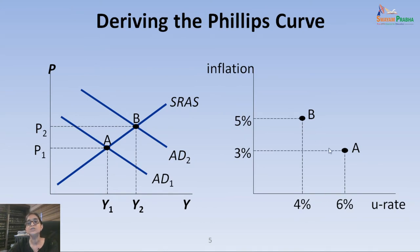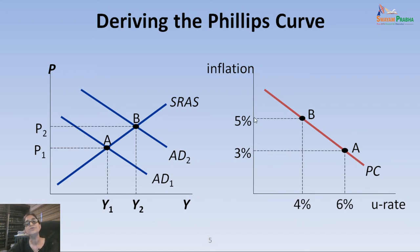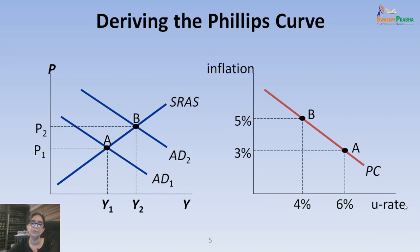The price level has increased from P1 to P2. If at P2 the inflation rate is 5%, because output has increased the unemployment rate has decreased from 6% to 4%. If we join these two points A and B in the next panel, we get this downward sloping curve called the Phillips Curve, indicating that when the inflation rate is higher, unemployment is lower — showing an inverse relationship between inflation rate and unemployment rate.